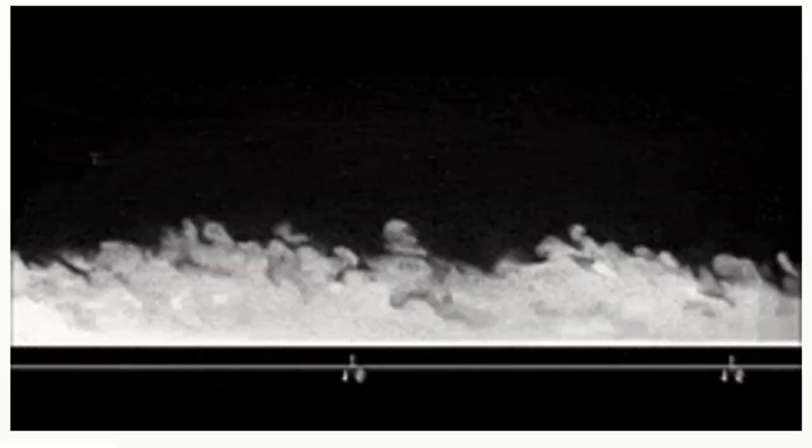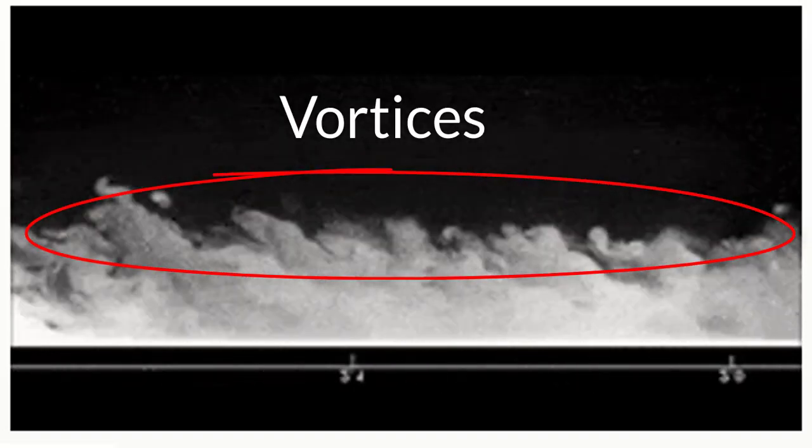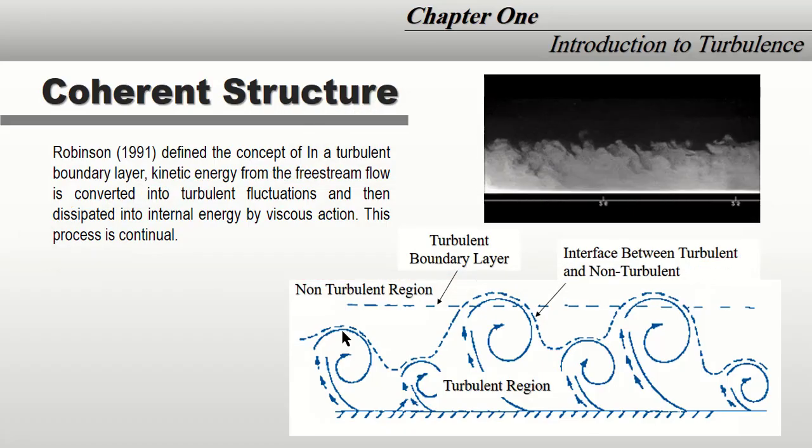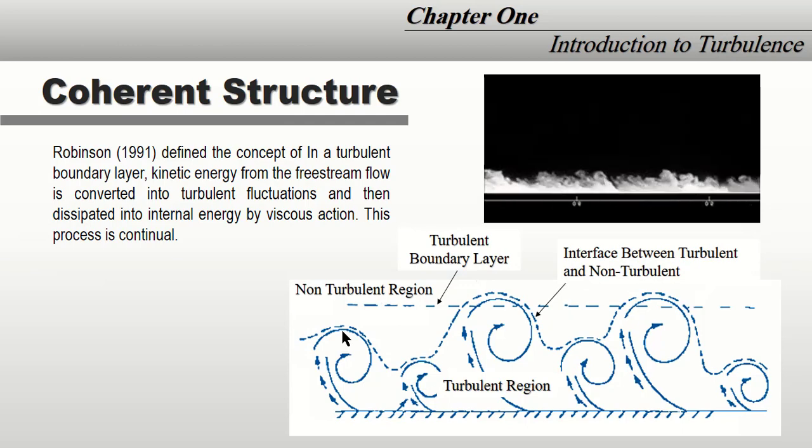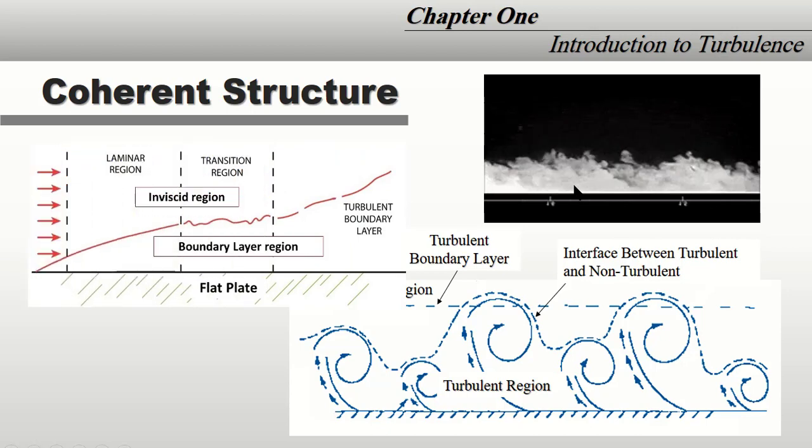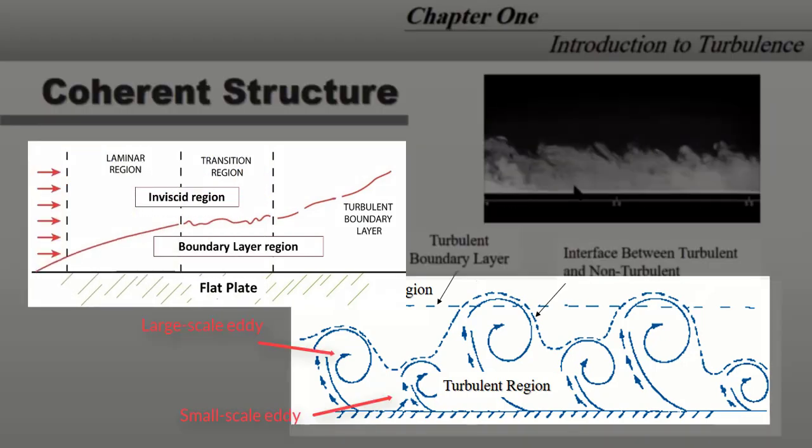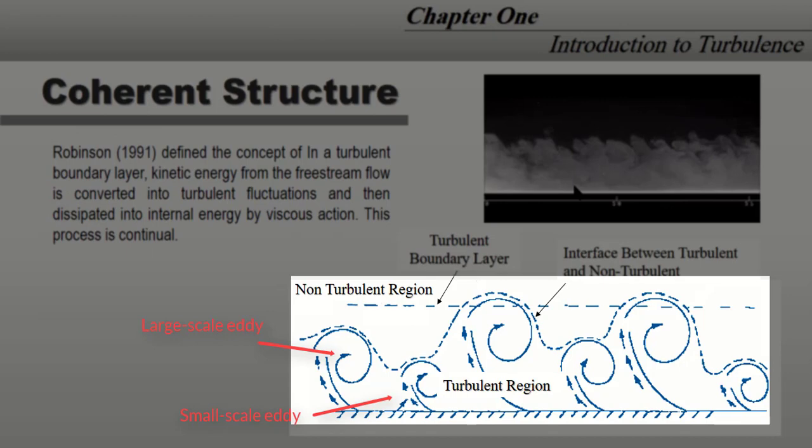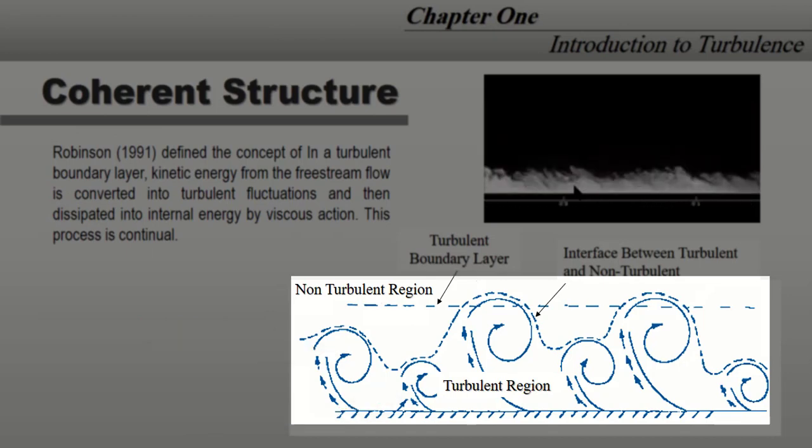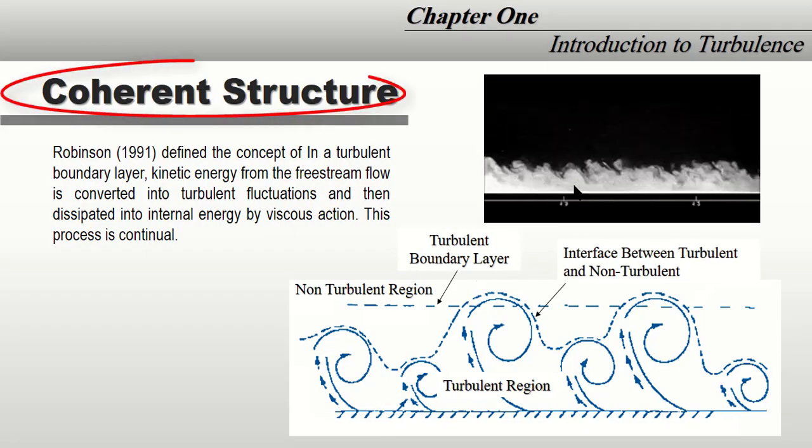We generate more and more vortices, as you can see here. One of the approaches to understanding how these vortices are generated and how the flow changes from laminar to turbulent is by breaking the multi-scale turbulent motion into elementary organized motions known as eddies or coherent structures.